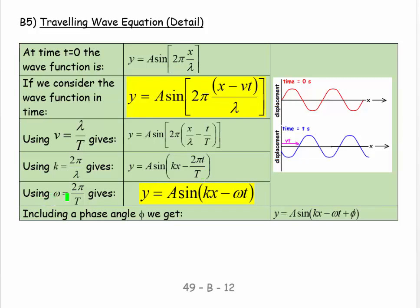And then finally, if we say ω equals 2π over the period, we get y equals A sine kx minus ωt. These are both moving to the right. They're both important. In the top case, it's in terms of velocity and wavelength. And in the bottom case, it's in terms of the angular wave number and the angular frequency.